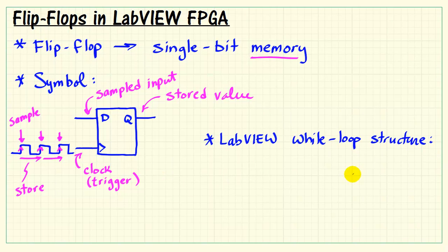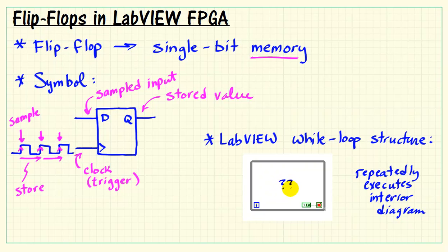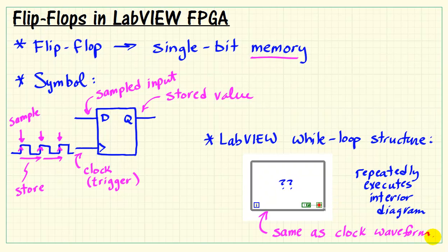Let's see how this notion of a flip-flop gets implemented in LabVIEW. First, this is constructed using a while loop structure. The while loop repeatedly executes whatever elements it sees on the interior diagram. Notice the characteristic circulating arrow appearing here for the while loop structure — this gives us this notion of iterating on the subdiagram. So we can think of that iteration as being the same thing as that periodic clock waveform.